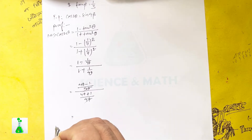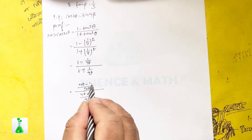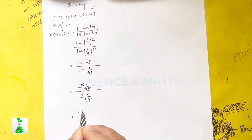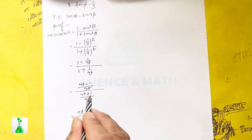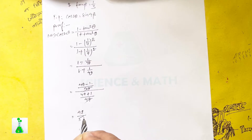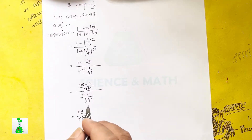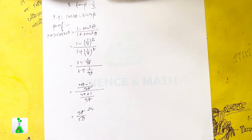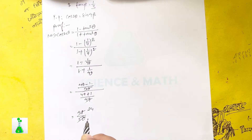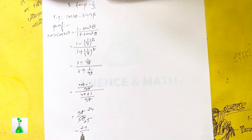The 49s cancel, giving 48 divided by 50. Taking the common factor of 2: 2 times 24 is 48 and 2 times 25 is 50, so we get cos 2 theta equals 24 by 25.